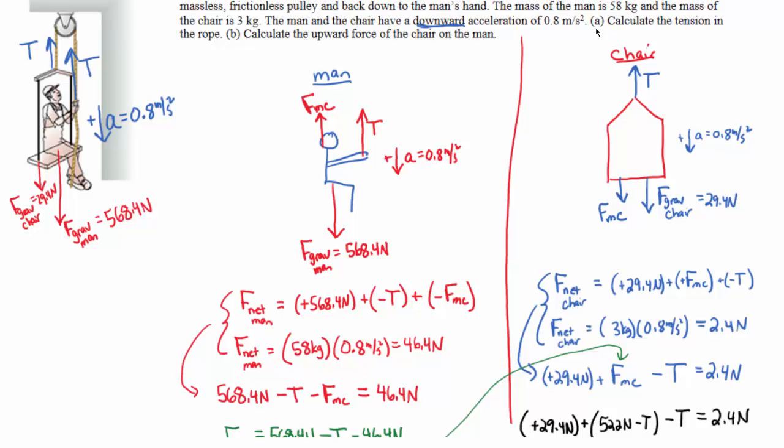Once you get the hang of setting up individual equations, it's useful to learn the system approach, because often you'll just be asked to calculate the acceleration given the tension, or the tension given the acceleration. The force of the chair acting on the man is something asked for less often. So if all you want is the tension in the rope, the system approach is faster. But the individual force approach is essential when an internal interaction force like FMC is also required.